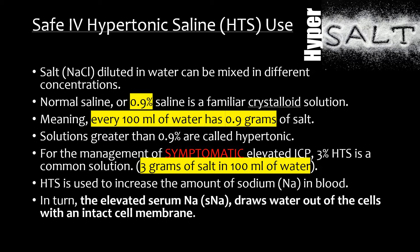3% hypertonic saline is 3 grams of salt in 100 milliliters of water. Hypertonic saline is used to increase the amount of sodium in blood. The osmolarity of normal serum is 140 milliequivalents. The osmolarity of normal saline is 154 milliequivalents, and the osmolarity of 3% saline is 1027 milliequivalents.